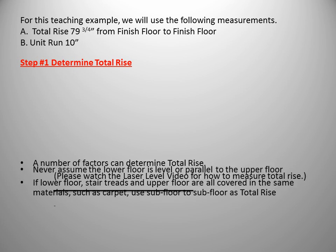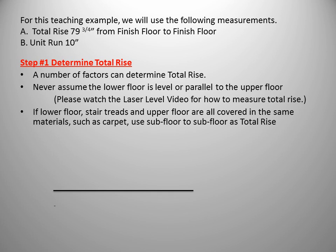Step one: determine total rise. A number of factors can determine total rise. Never assume the floor is level or parallel to the upper floor. Please review the laser level video for how to measure total rise. If a lower floor, stair tread, and upper floor are all covered in the same materials, such as carpet, we can use subfloor to subfloor as our total rise. When you add materials to each surface, the total rise decreases on the lower floor and increases on the upper floor by the same amount, so the net effect is zero.